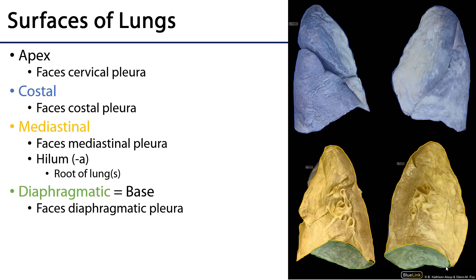So let's get started with surfaces. There are three major surfaces of the lungs. There are costal surfaces which face the costal pleurae, which line the ribs and the intercostal spaces. There's also the mediastinal surface, which faces the mediastinum and the mediastinal pleura. It's this surface which hosts the hyla of the lungs, and the contents of the hyla are the roots of the lungs.